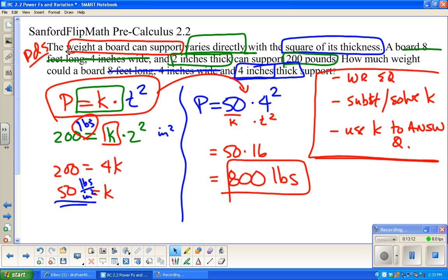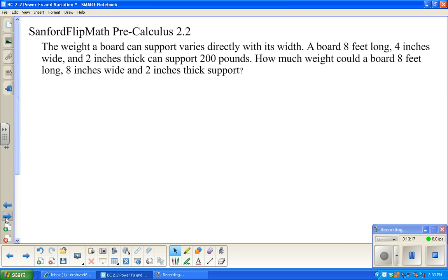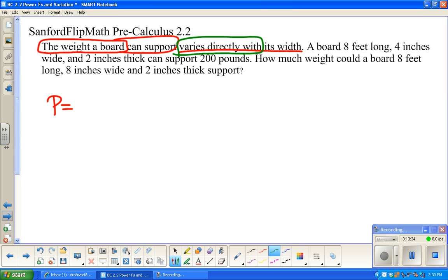So, again. Write the equation. Substitute what you know to solve for k. Use k to answer the question. Let's do it again. The weight that a board can support varies directly with its width. The weight that the board can support varies directly equals k times its width. That's why I didn't want to use w earlier. So, again, we wrote the equation. Now, we're going to substitute what we know.